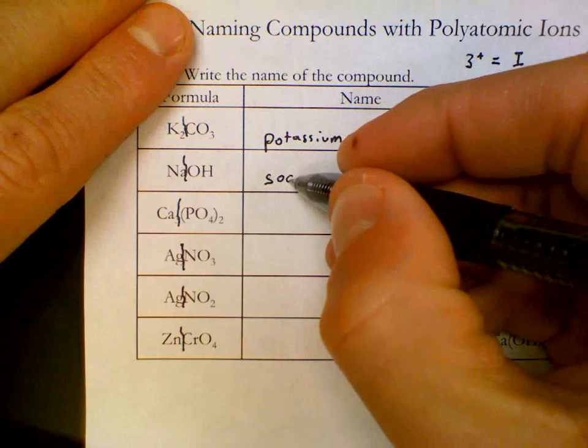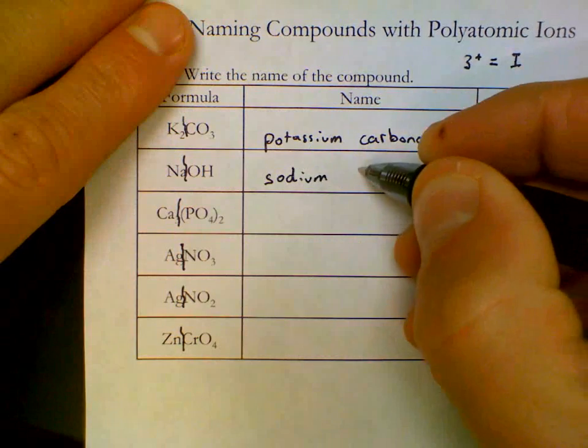Na is sodium, full first name. OH is called hydroxide.